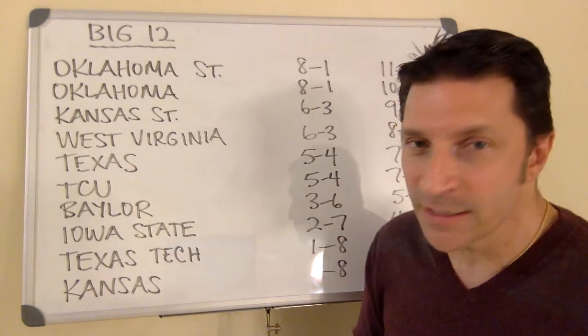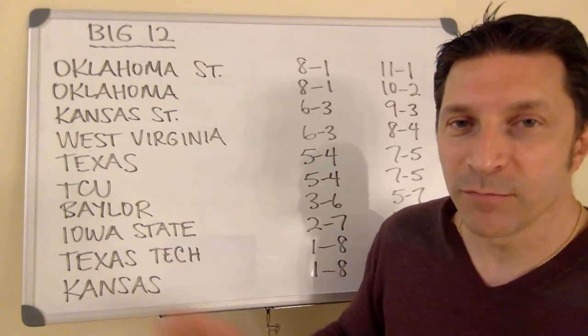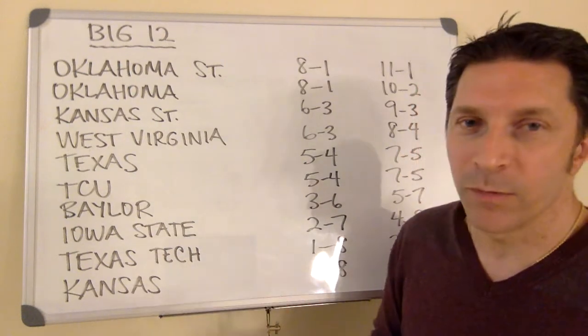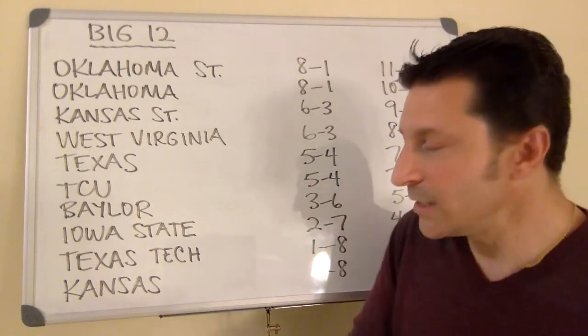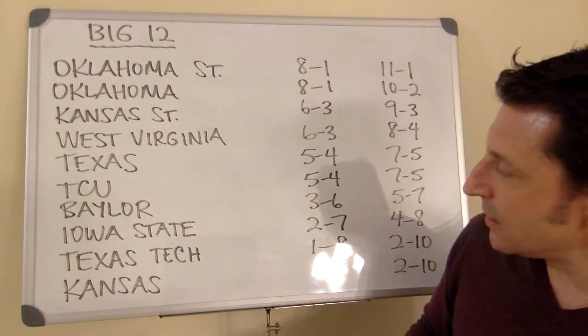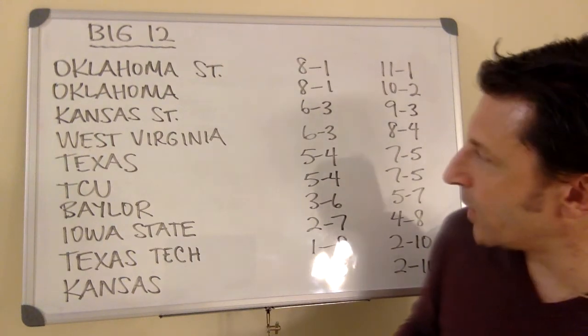Iowa State, Texas Tech, and Kansas. I know that the Cyclones, much is made of them breaking through and being respectable, getting to postseason play this year. I don't see it. The Cyclones go 2-7, 4-8 overall.